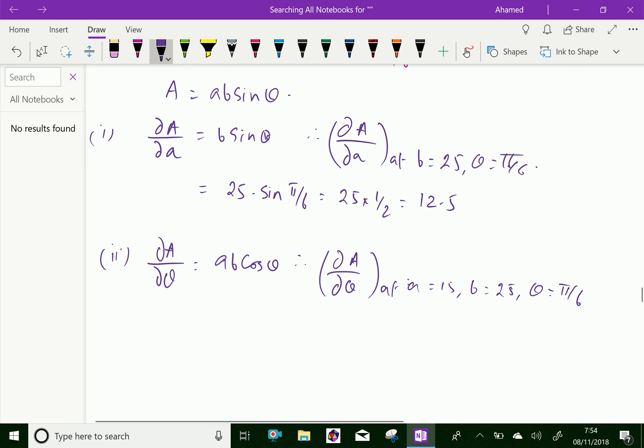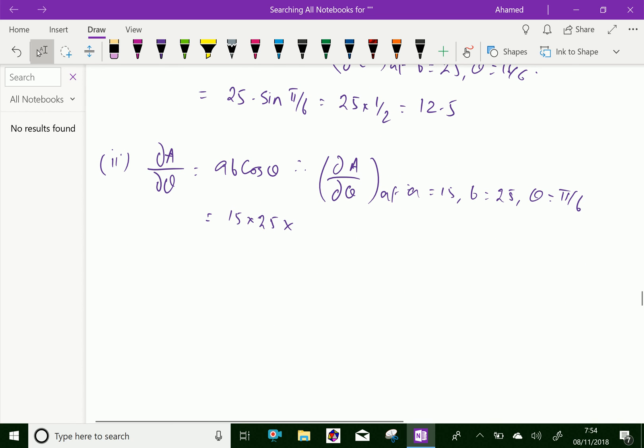We can write this equals 15 × 25 × cos(π/6), where cos(π/6) = √3/2, which gives 375√3/2.